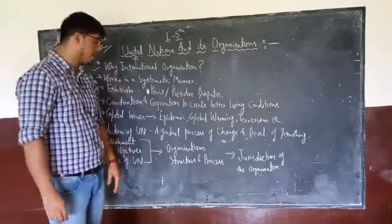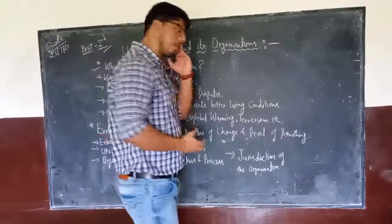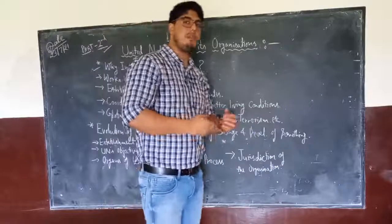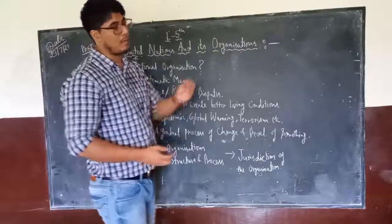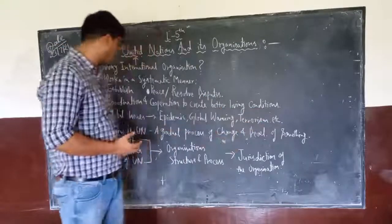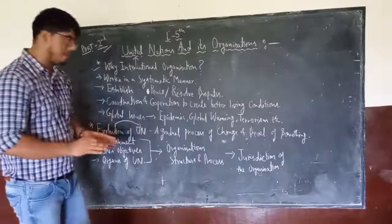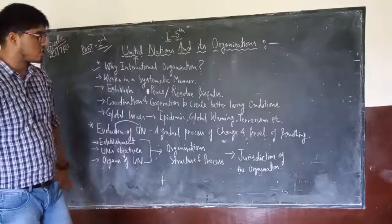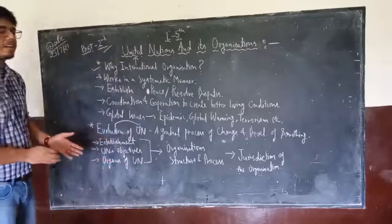Those were the revision points. The topic for today will be the evolution of UN. Evolution means a gradual process of change and development — when something changes with passing time and we make various modifications and developments in a particular organization. We are talking about the growth, development, and modifications of the United Nations with the passage of time. The content of this video lecture will include: how UN was established, the objectives of UN, the organs of the UN, the structure and process, and the jurisdiction of the organization.